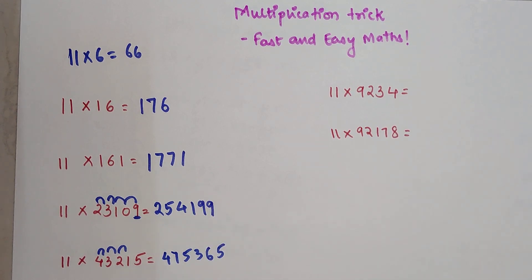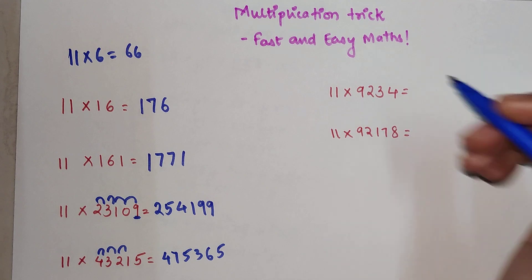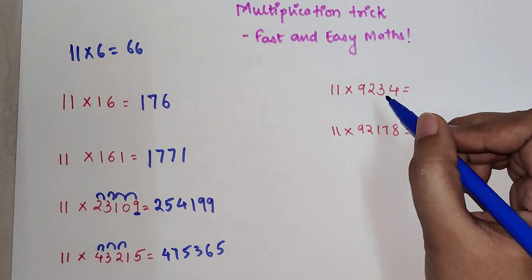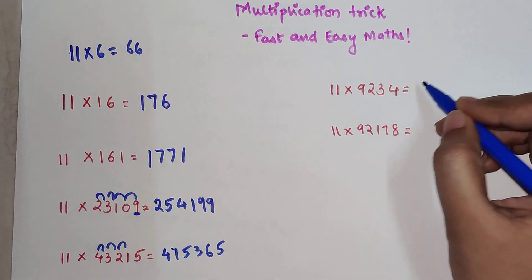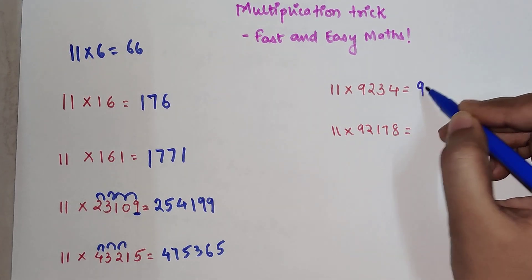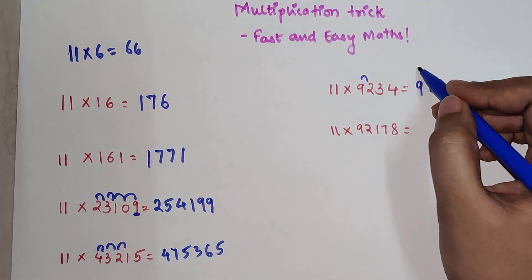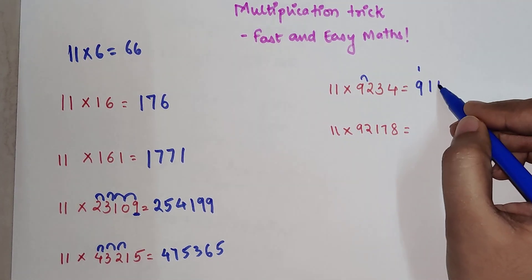So now next one is 11 into 9234. You have 9, then 9 plus 2 is 11, so 1 and 1, then this is 5, this is 7, and this is 4. Now you might be wondering why have I written 11 like this, 1 on top of 9 and 1 over here.